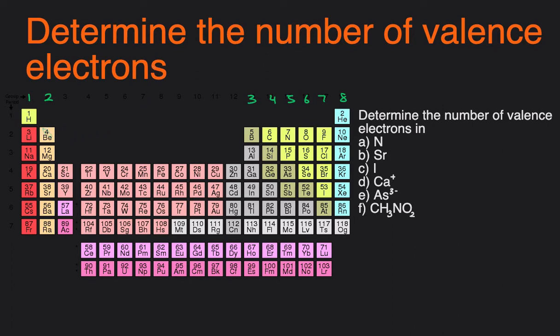But we're just going to focus on the main group elements because there is some debate as to how many valence electrons transition metals have. Different teachers have different opinions on this.